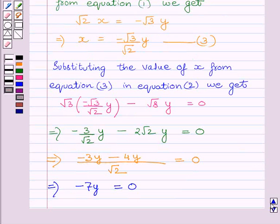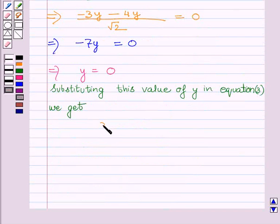Substituting this value of y in equation 3, we get x is equal to minus root 3 upon root 2 multiplied by 0, which implies x is equal to 0.